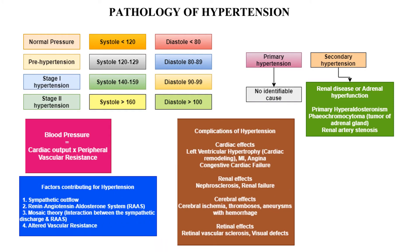The complications of hypertension include cardiac effects causing left ventricular hypertrophy, leading to cardiac remodeling, myocardial infarction, angina, and congestive cardiac failure. Renal effects include nephrosclerosis and renal failure. Cerebral effects include cerebral ischemia, thrombosis, aneurysms, and hemorrhage. Retinal effects include retinal vascular sclerosis and visual defects.